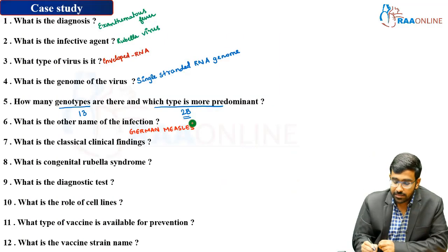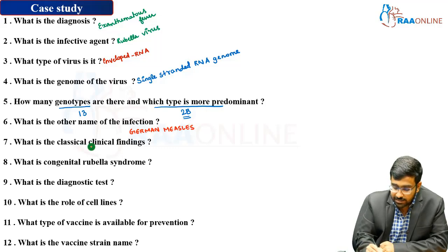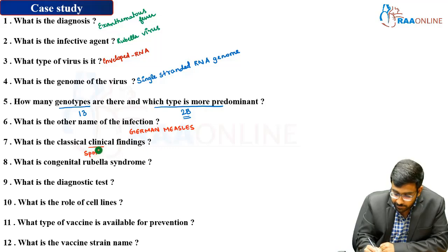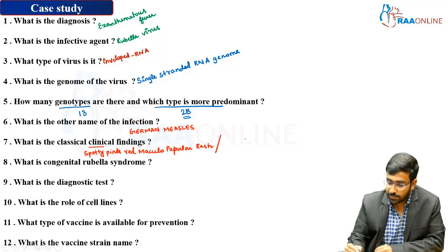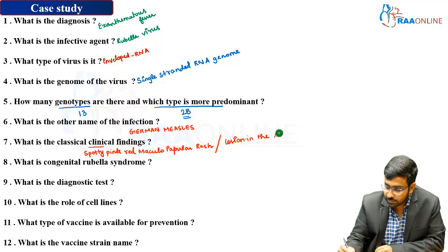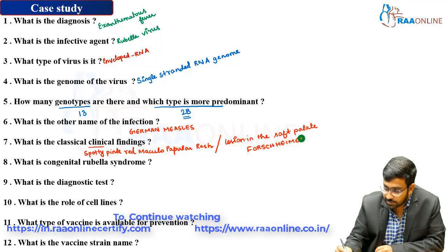The classical clinical findings of rubella: the patient typically presents with rash and fever, along with a prodrome of flu-like illness. The clinical sign is a spotty, pink-red maculopapular rash. We are also able to see lesions in the soft palate known as Forchheimer spots, which are pathognomonic for rubella infection.